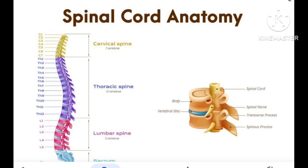Now let us see about the spinal cord. The spinal cord exits from the skull bone through a hole called the foramen magnum. Through that, the medulla oblongata continues down as the spinal cord. The spinal cord is present from the end of the skull down through the backbones. The vertebrae or spine cover the spinal cord. The spinal cord can be divided based on the vertebral region: cervical, thoracic, lumbar, sacral, and coccyx.